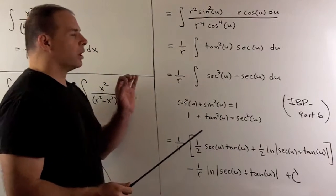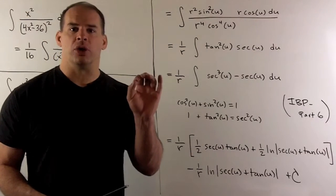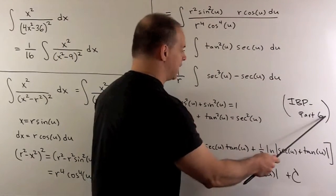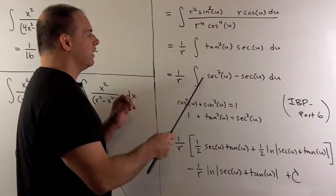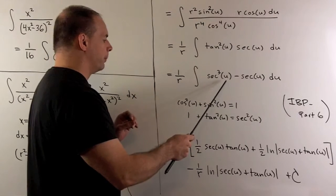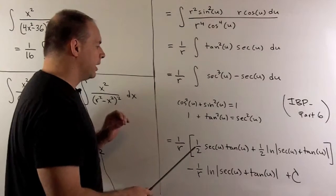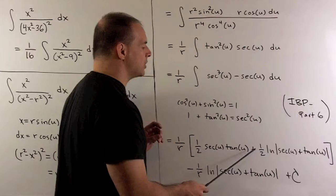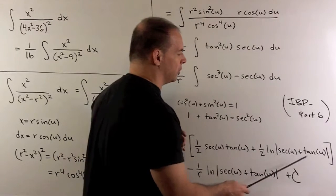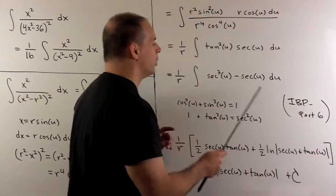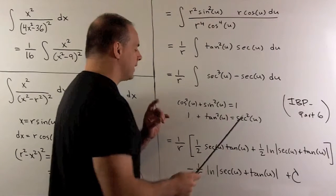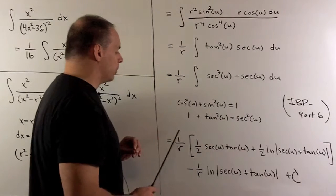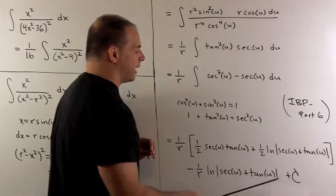Now, for the next part, we need a special integration by parts. So, that's going to be an integration by parts, part 6. And that's going to be the indefinite integral of secant cubed of u. So, we look that up, and that's going to be given by this expression here. 1/2 secant u tan u plus 1/2 natural log absolute value of secant u tan u. For the indefinite integral of secant u, that's given by natural log of absolute value of secant u plus tan u. We multiply both by 1 over r and then add our constant.